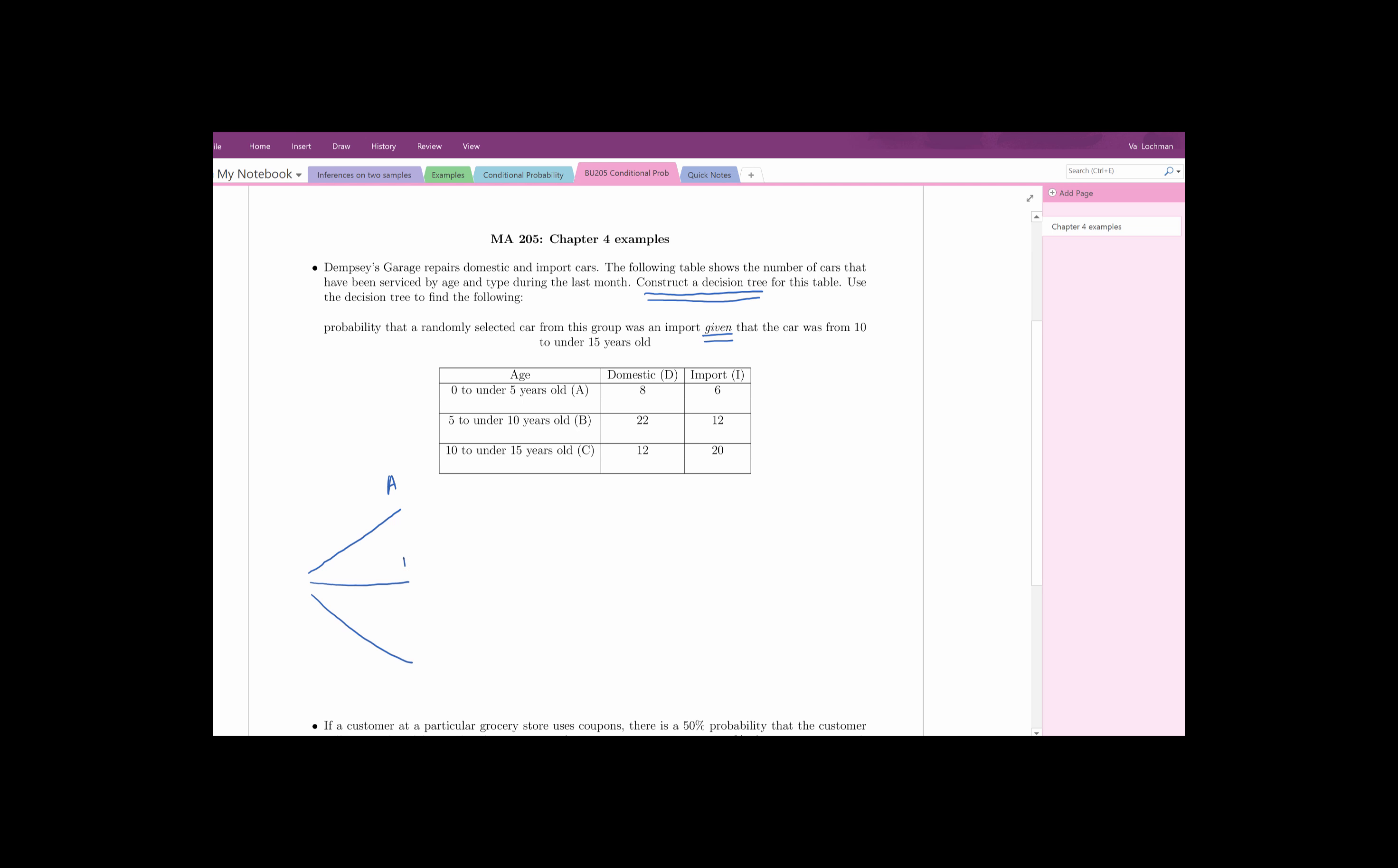Let's go ahead and do the decision tree. If you were to pick a car at random you have three options for the age group right. Let's say the youngest is group A, group B, and group C. And then in each age group there's also domestic and import for each one. Now let's go ahead and compute the total number of cars for each category. The total number of cars in age group A is 14, age group B is 34, age group C is 32 and the total number of cars is 80.